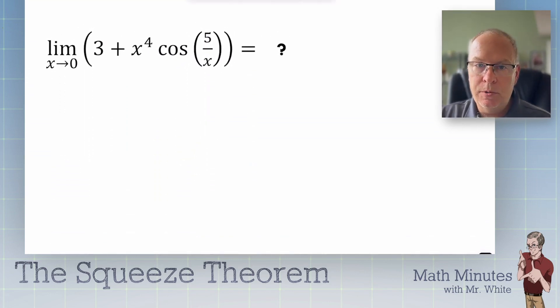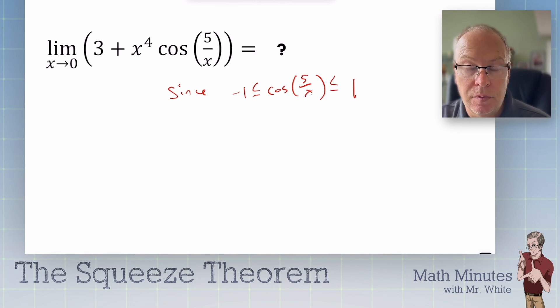With the sandwich theorem, you often have one of these oscillating functions involved with it, like a cosine or sine, because that's the part that goes from 1 to negative 1. So, let's start this again. Let's do it the same way. Let's say since negative 1 is less than or equal to cosine of 5 over x, which is less than or equal to 1, right? That cosine ranges from 1 to negative 1 as well, just like sine. You knew that.